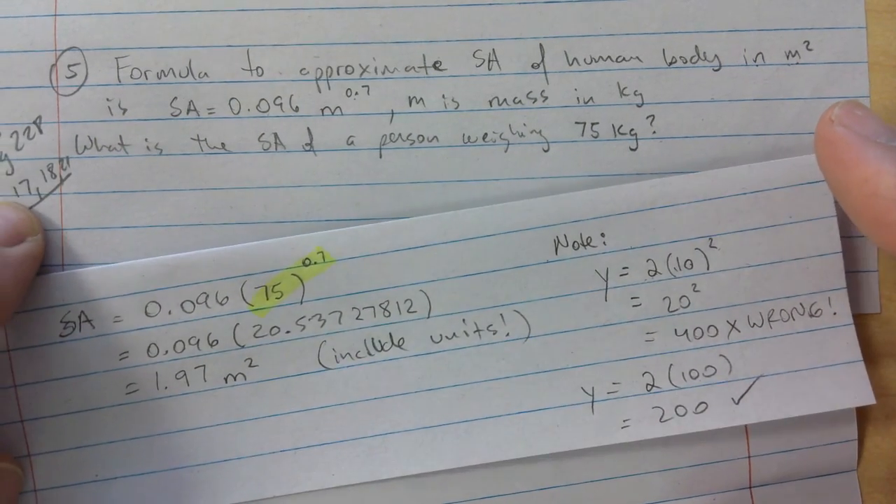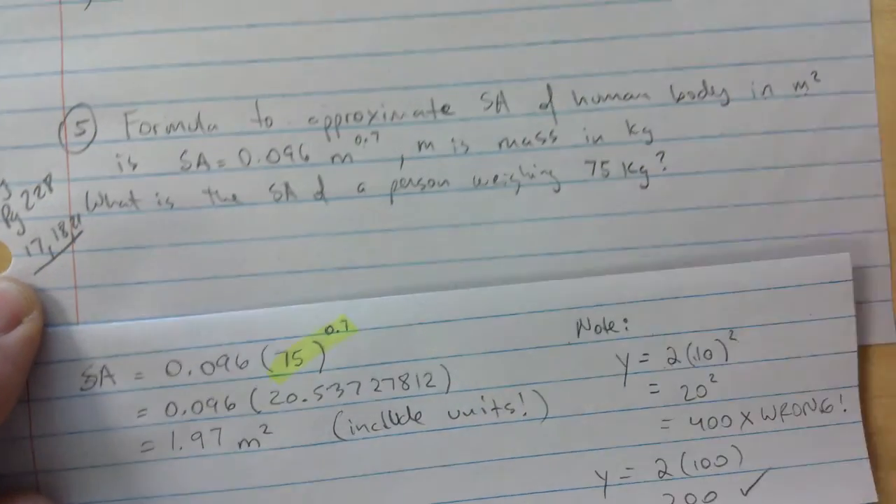So the exponent wins. BEDMAS - I don't know if you remember BEDMAS, brackets exponents. Brackets, there's nothing inside the brackets, but then you apply the exponent to it, and then you multiply. And if you want to try more, there are three word problems like this - 17, 18, 21 on page 228. Questions 17, 18, and 21 on 228.